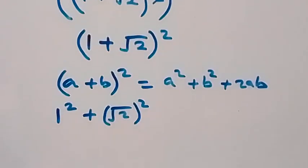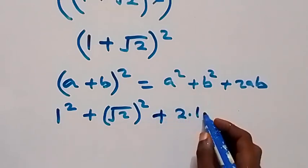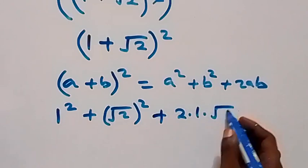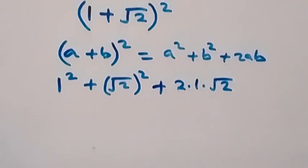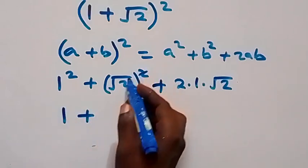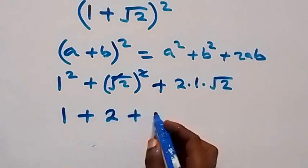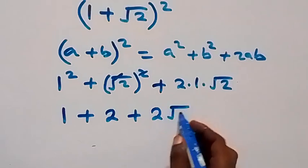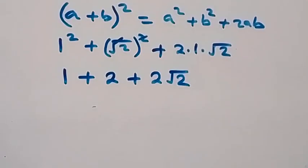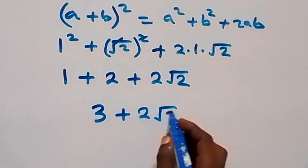Plus 2 times 1 times root 2. Here, 1 squared is 1, plus root 2 squared. Square and square root cancel, and this is 2, plus here this is 2 root 2. Then 1 plus 2, of course that's 3, plus 2 root 2.